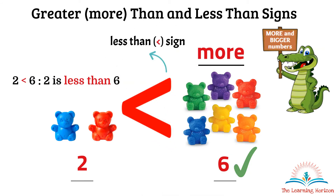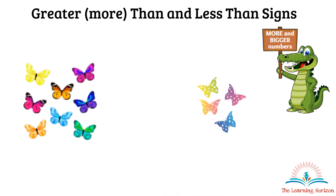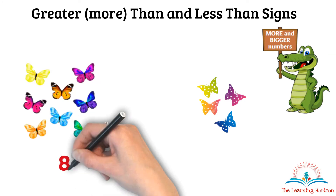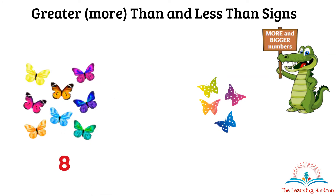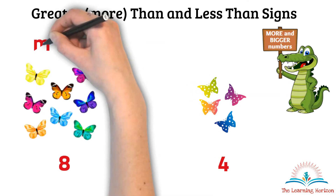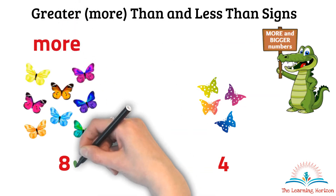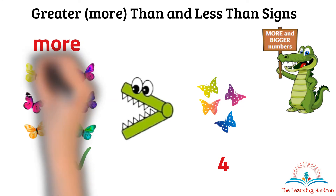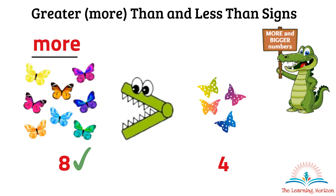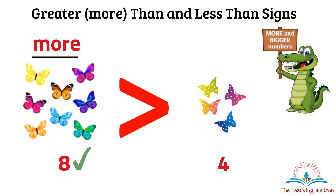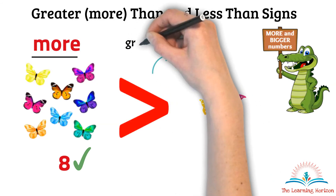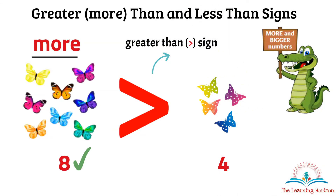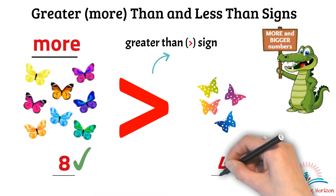We have a few butterflies. Here there are 8 and here there are 4. We have more butterflies here. So the hungry alligator will eat these butterflies because they are more. The sign shown is the greater than sign. We can also say 8 is greater than 4.